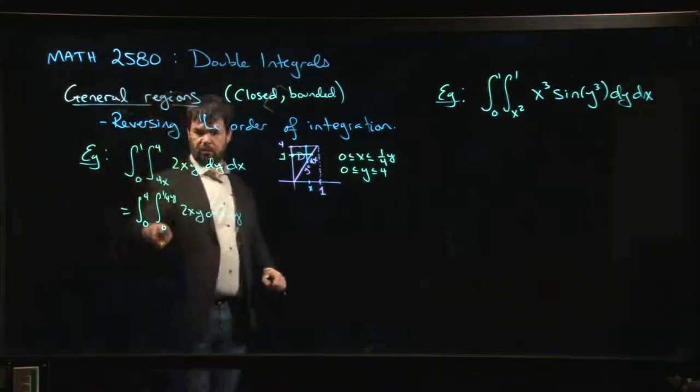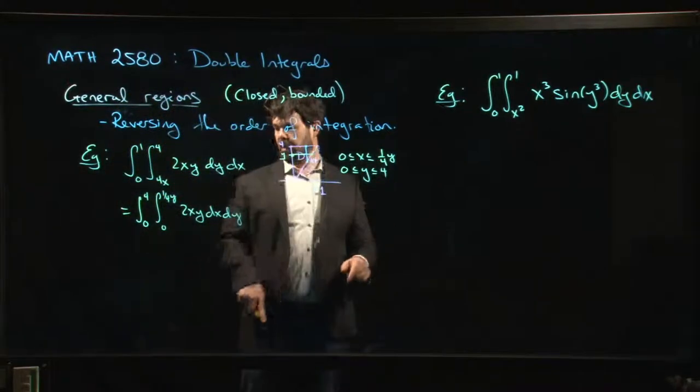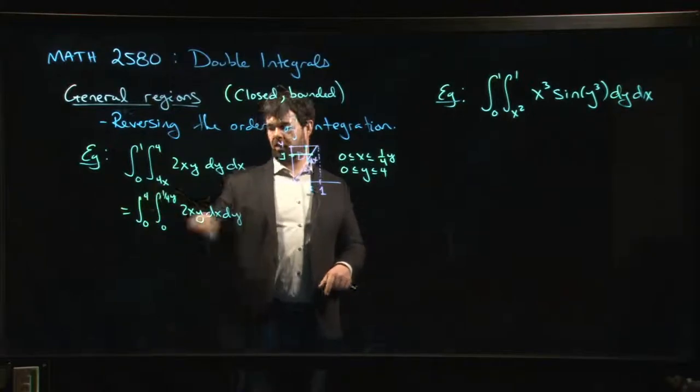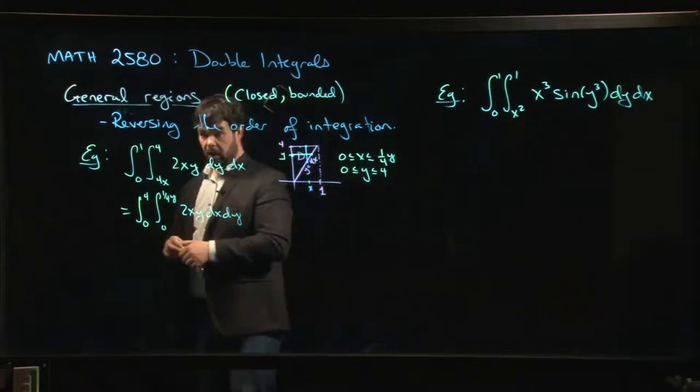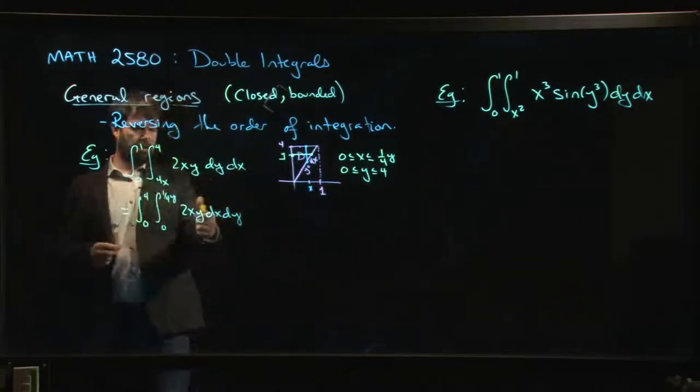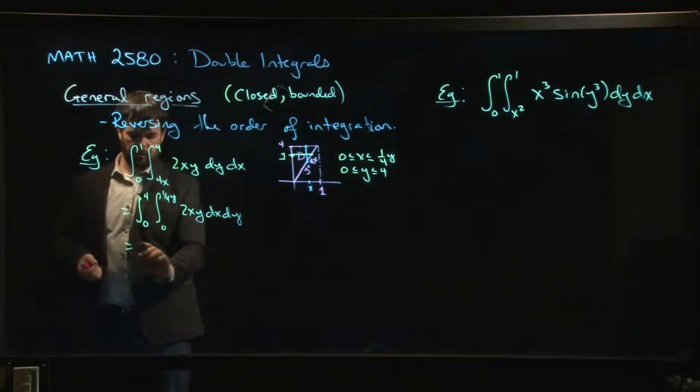So x goes from zero to one quarter y and we do that for each y value between zero and four. And now if you wanted to finish off, we just do the antiderivative as usual.